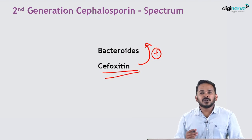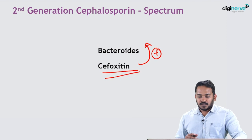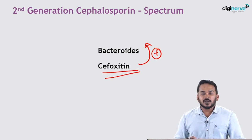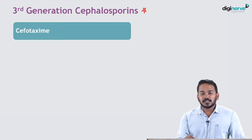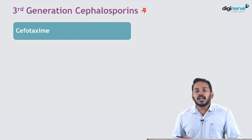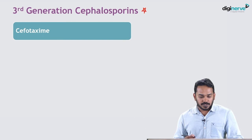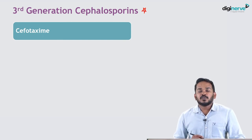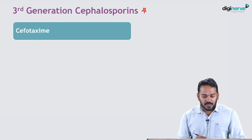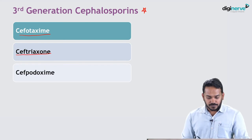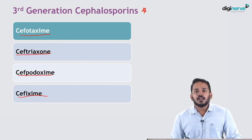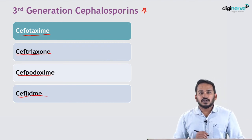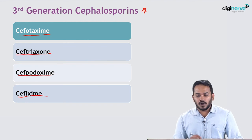Second generation cephalosporins are not used much clinically today. Third generation cephalosporins are a very important topic, frequently asked in university exams and very commonly used clinically. There are a few third generation cephalosporins to remember: cefotaxime, ceftriaxone, cefpodoxime, and cefixime. All these agents are used on a regular basis in almost all hospitals.